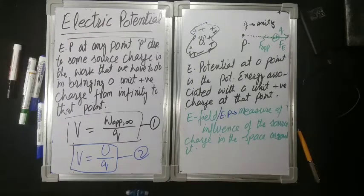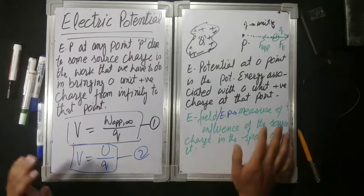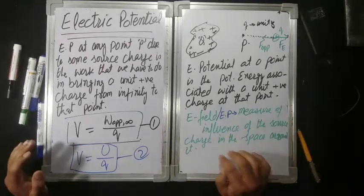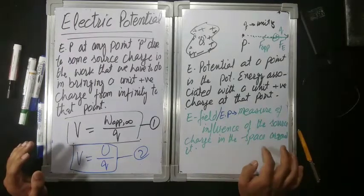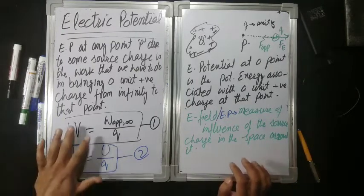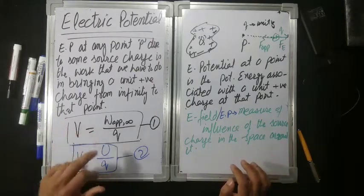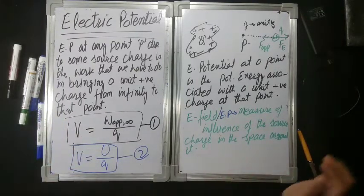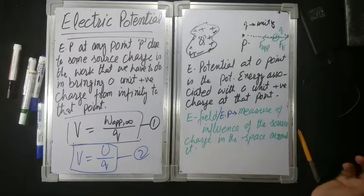So, let's continue. Potential at a point is the measure of the influence of the source charge in the space around it. It can be positive as well as negative depending on what work done jo hai woh kya karna pada hoga.